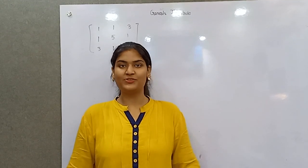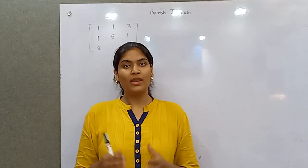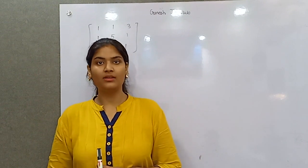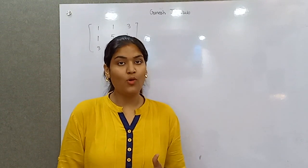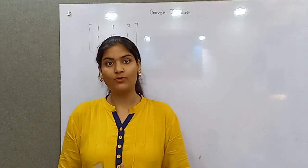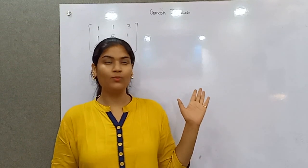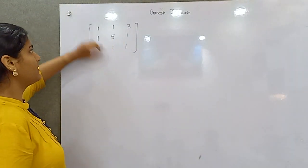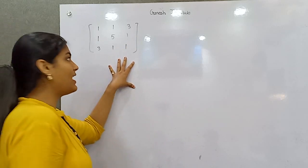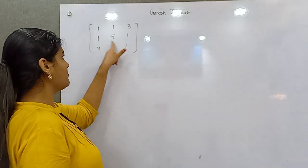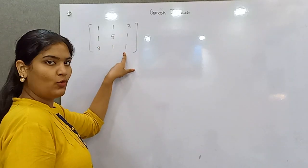Hello and welcome to Ganesha Institute channel. One of you guys mentioned that I need to make a video on 3 by 3 order matrix for eigenvalues and vectors, so here we go. Here is the matrix of 3 by 3 order and the values are 1, 1, 3; 1, 5, 1; 3, 1, 1. Hope you can see it in this video.